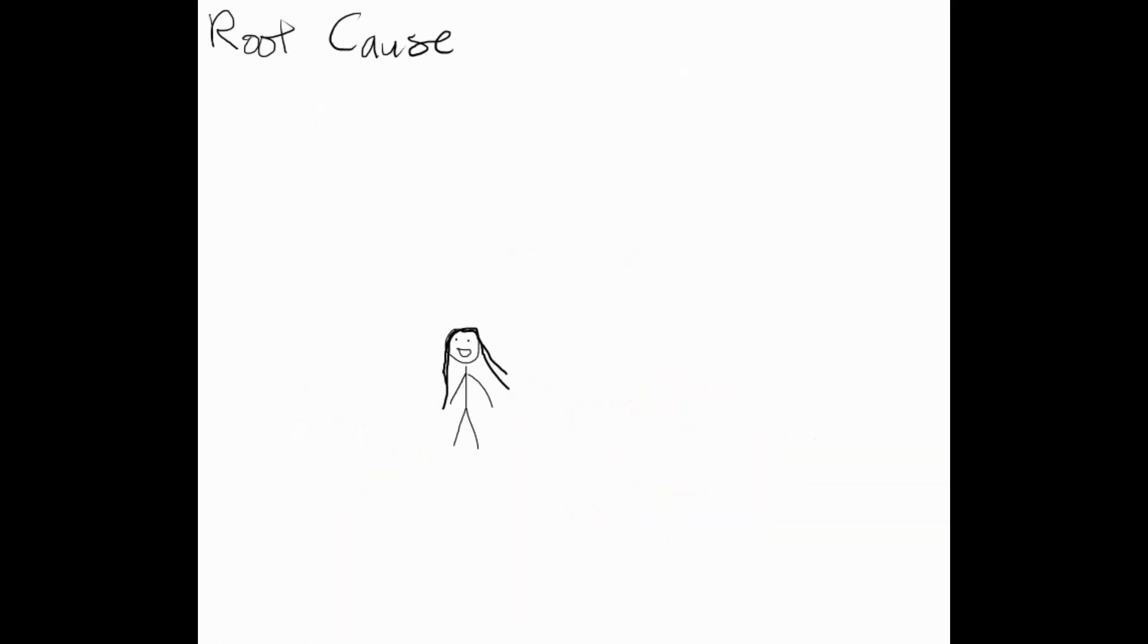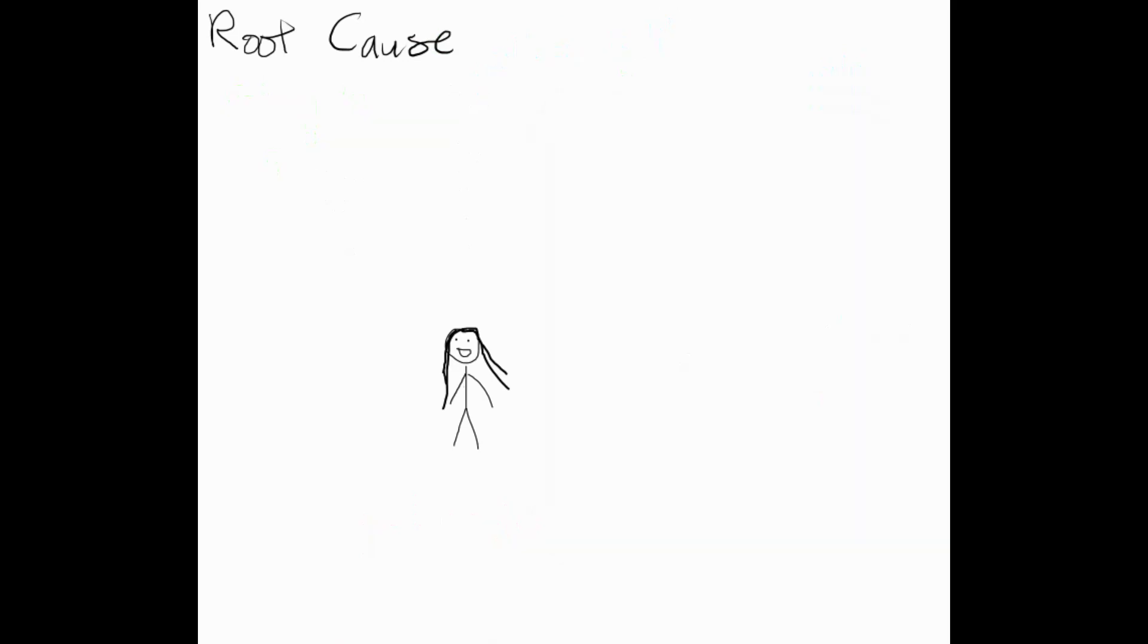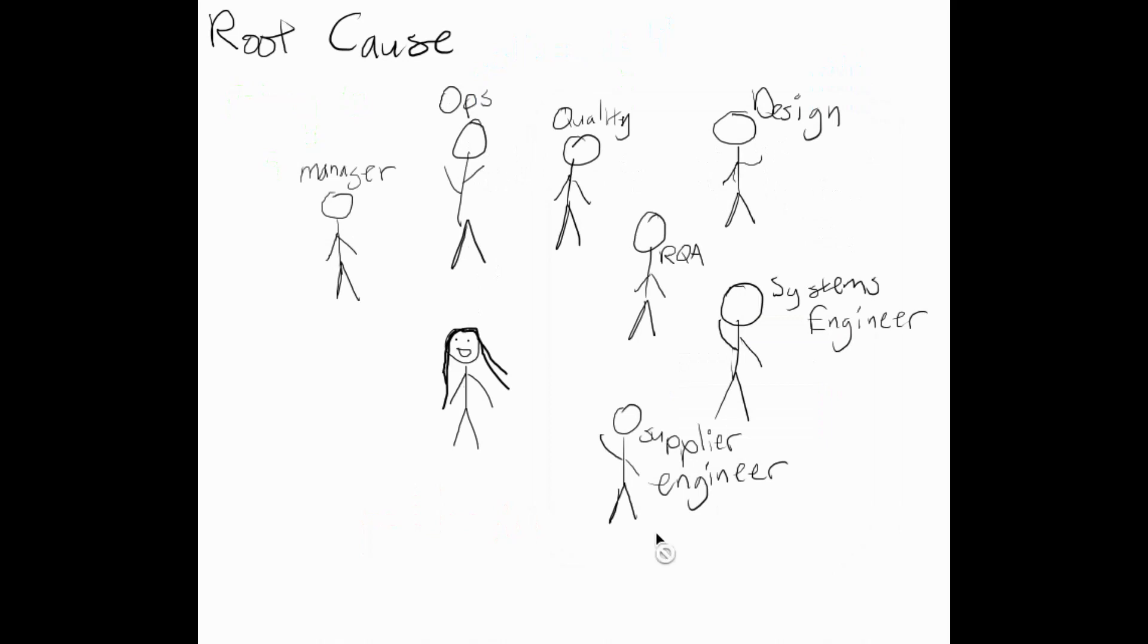Root Cause. In this phase, the CAPA owner pulls together a diverse group of department representatives to talk about what the problem is and how it occurred. The problem definition is extremely important to hash out prior to discussing how the problem happened. It's amazing how often people disagree on what the problem really is. Ensuring everyone agrees on one problem statement will help direct the root cause conversation in an appropriate direction.